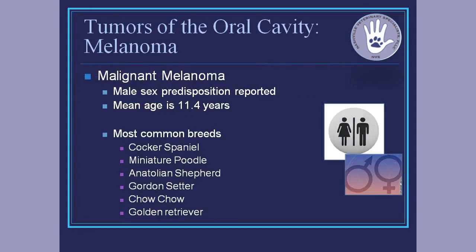Starting with the most common tumor in the dog: malignant melanoma. Again, there is that male sex predisposition. The mean age for dogs is about 11 years old. Most common breeds are Cocker Spaniel, Poodle, Shepherd, Setter, Chows, and Retrievers. One dog that doesn't make this list but I personally feel should always be on the melanoma list is the schnauzer — miniature, giant, or standard. I see a lot of miniature schnauzers with oral melanomas.